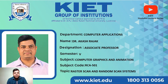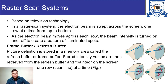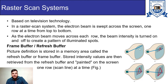Hello students. In today's lecture I will discuss raster scan and random scan systems. Raster scan systems are based on television technology. In a raster scan system the electron beam is swept across the screen one row at a time from top to bottom. As the electron beam moves across each row, the beam intensity is turned on and off to create a pattern of illuminated spots.